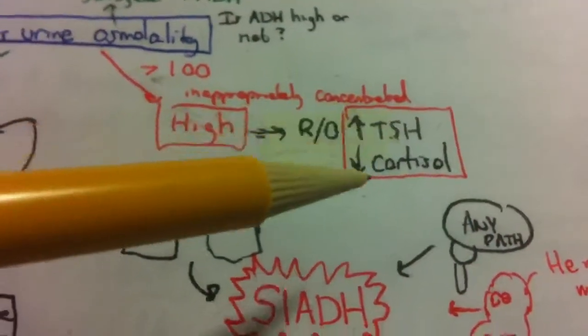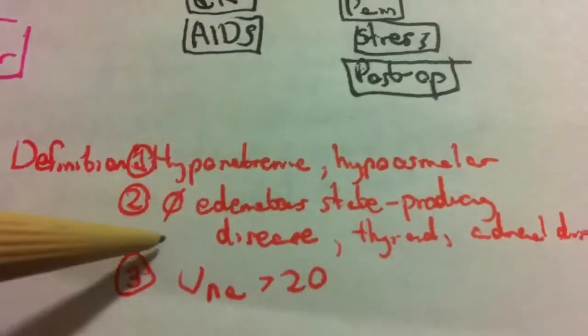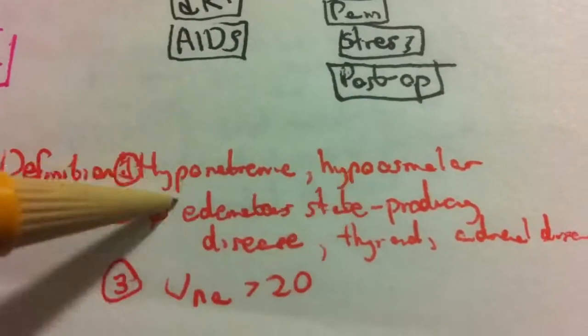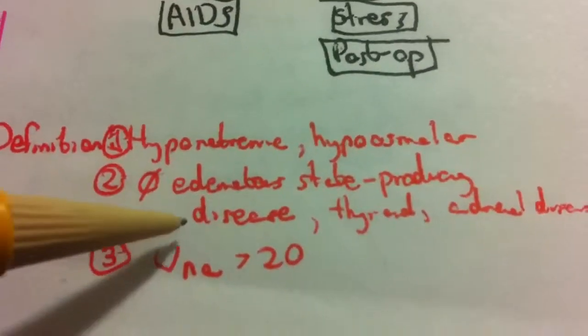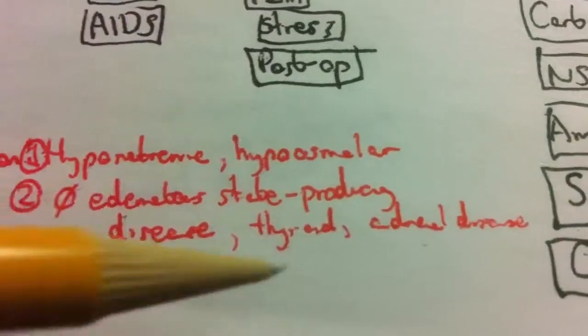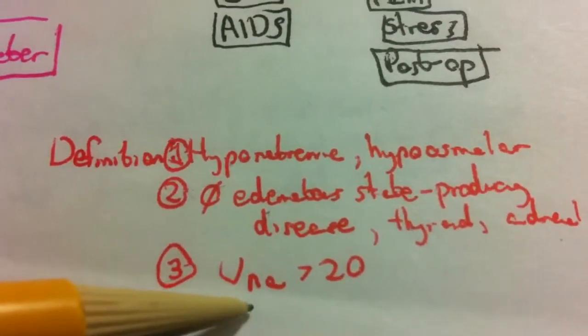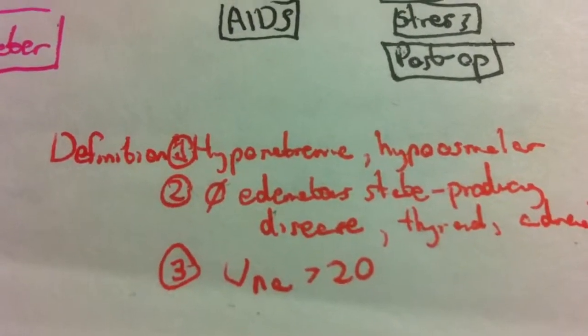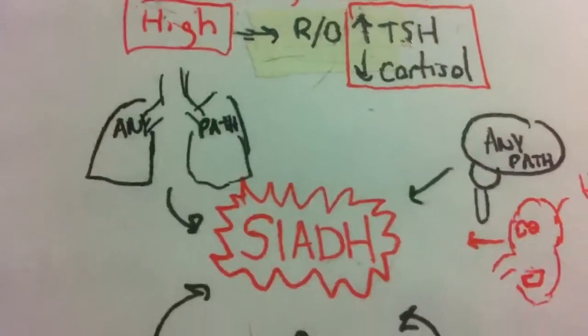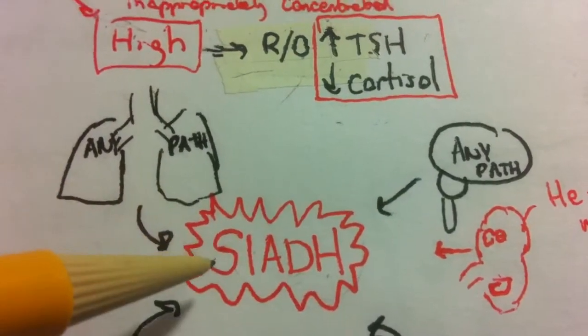So to go back here, once we've ruled those out, we have a hyponatremia, hyposmolar hyponatremia, a true hyponatremia. We've ruled out edematous state, thyroid and adrenal disease, so hypothyroidism, hypocortisolism, and we have urine sodium greater than 20. We have syndrome of inappropriate antidiuretic hormone.